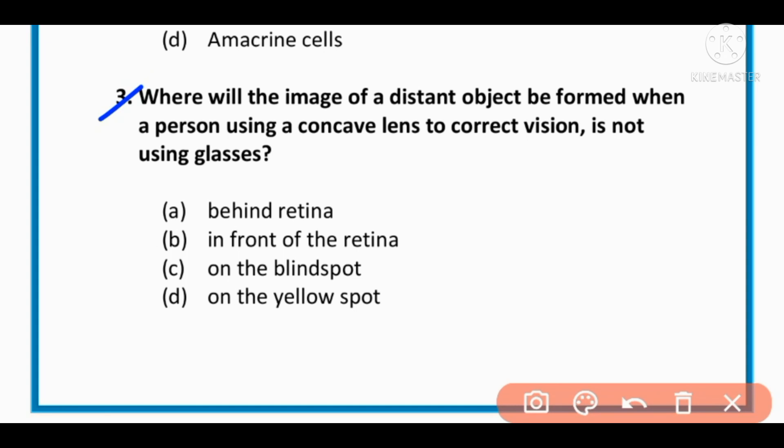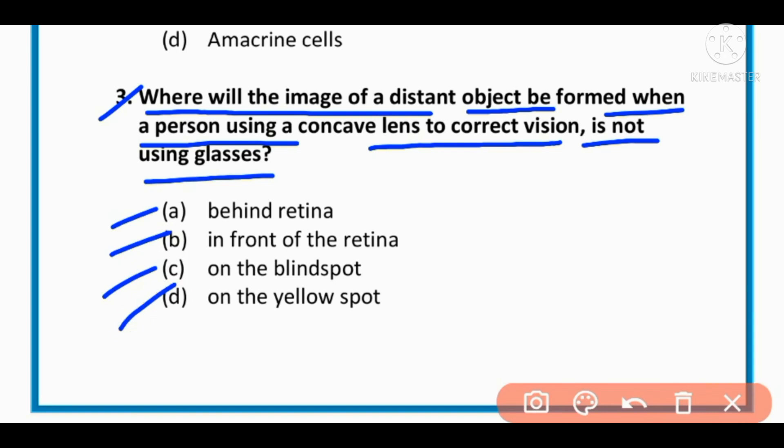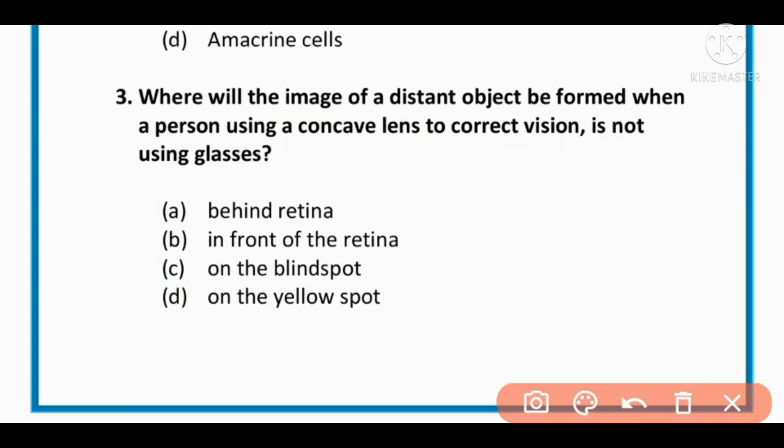MCQ number 3: Where will the image of a distant object be formed when a person using a concave lens to correct vision is not using glasses? Behind retina, in front of retina, on the blind spot, or on the yellow spot. The correct option is B: in front of retina.